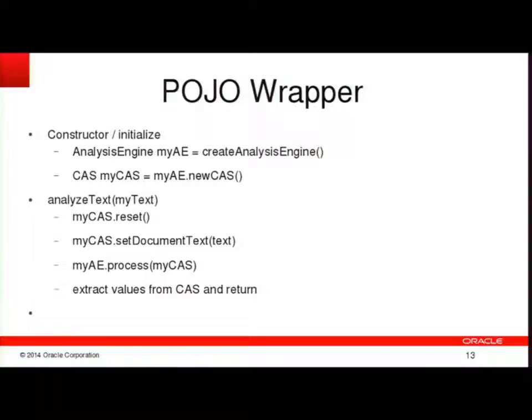POJO stands for plain old Java object. We want to shrink-wrap the whole thing down into a single method call. The technique I've used is to have a constructor that creates the analysis engine — the createAnalysisEngine method could be arbitrarily long and contain a number of sub-analysis engines, describing an entire pipeline. From that analysis engine you create one of these CAS objects at initialization. When you call the analyzeText method, you pass in a string called myText, reset the CAS, set the document text of the CAS, process your document, and then extract values from the CAS to return to the caller.